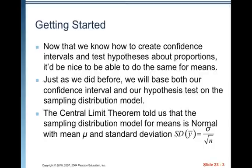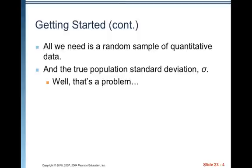The central limit theorem told us that the sampling distribution model for means is normal with a mean mu and a standard deviation of sigma over square root of n. All we need is a random sample of quantitative data and the true population standard deviation sigma. That's a problem because if we know sigma, we know something about the whole population — we probably know mu, which is the population mean.